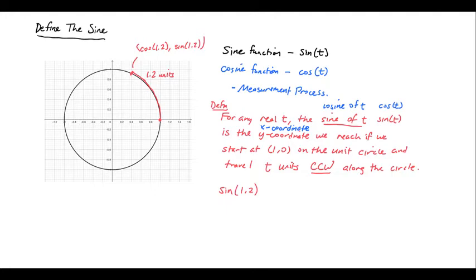And by the way, while I'm thinking about it, what if t is negative? Because that might happen. We might want to find the sine or cosine of a negative number. So we take this as a convention that if t is negative, then the phrase t units counterclockwise means the opposite of t units clockwise. So in other words, if I wanted to find sine of negative 1.2, I would go clockwise around the unit circle rather than counterclockwise and go clockwise by 1.2 units.